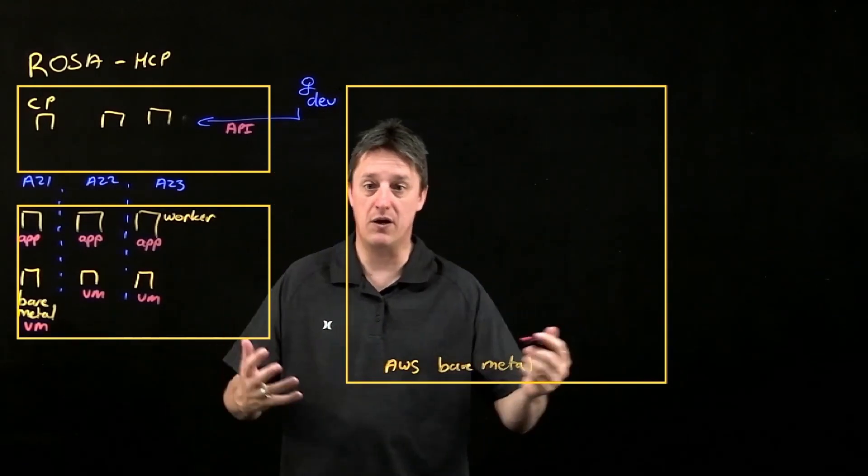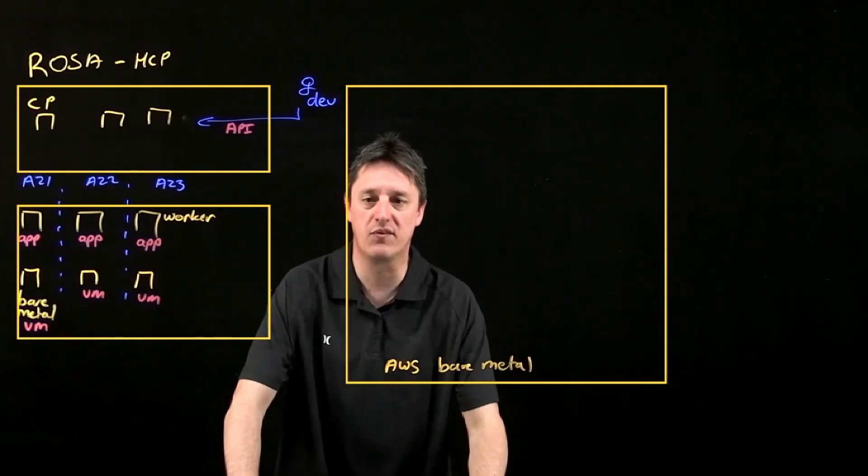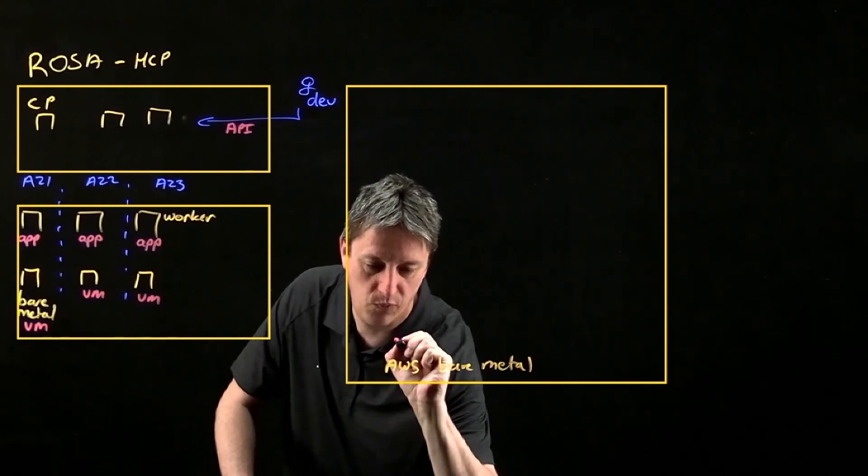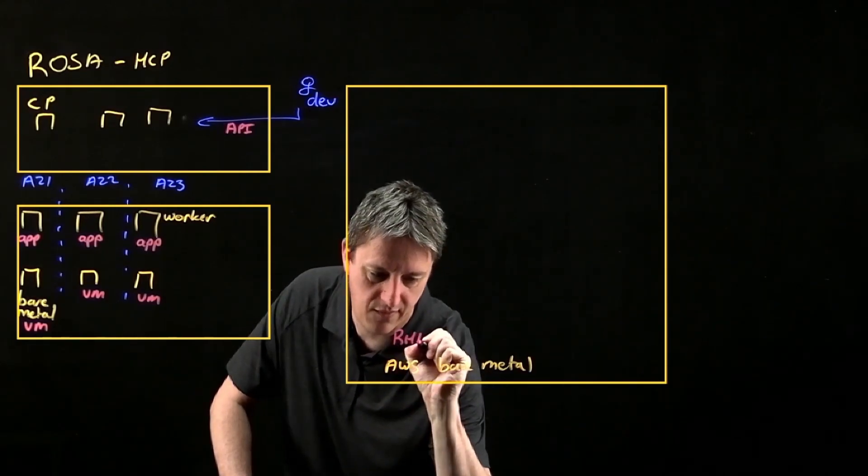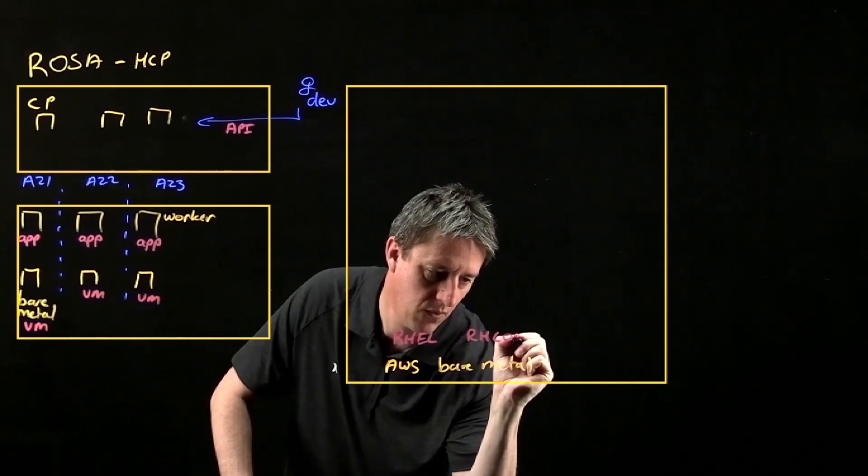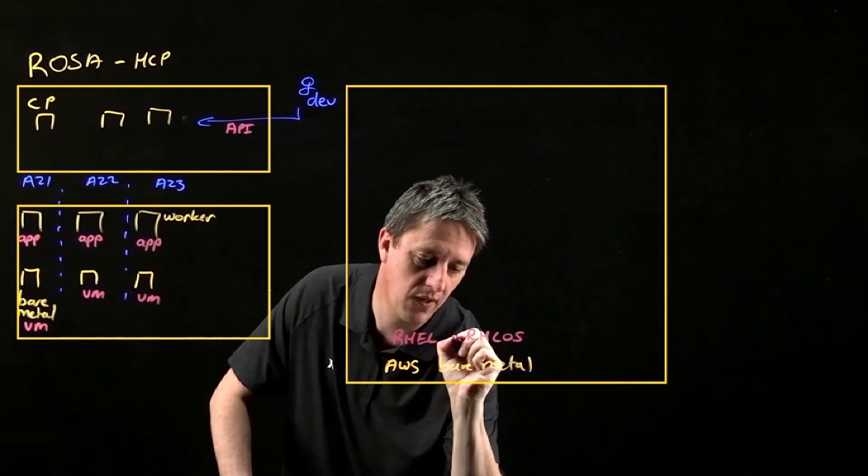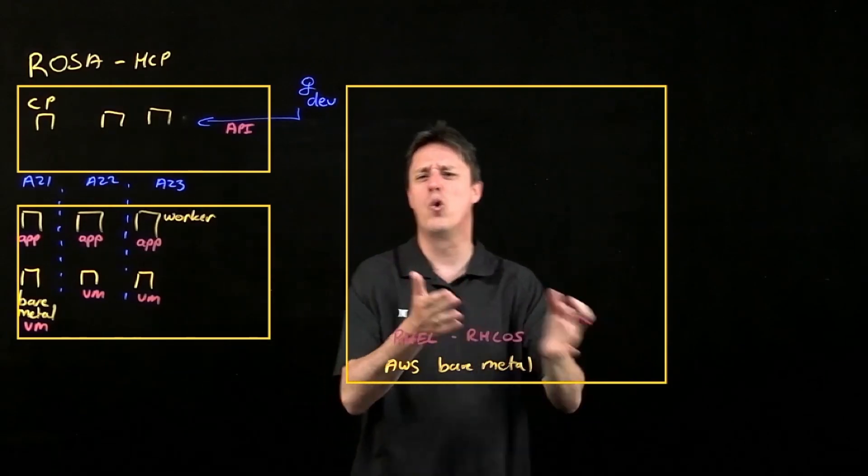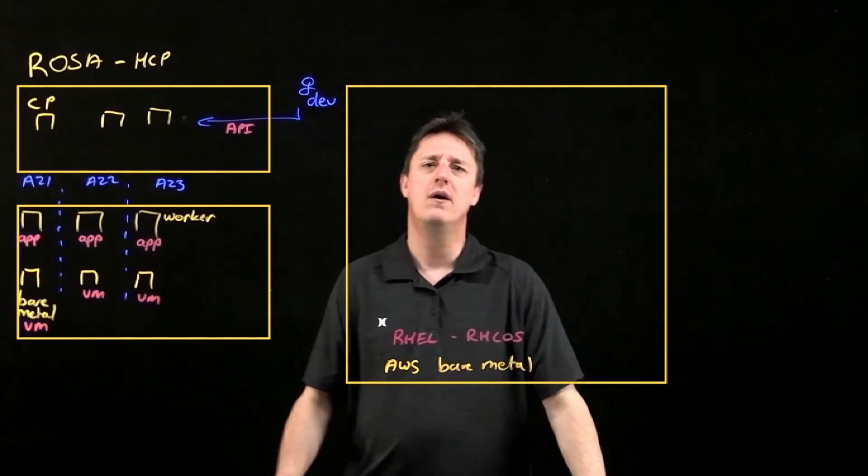Running on top of that bare metal instance, we're going to have an operating system that underpins this node. This would typically be Red Hat Enterprise Linux or Red Hat Core OS. Typically, in my experience, it's Core OS. It's no longer RHEL.